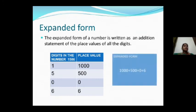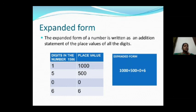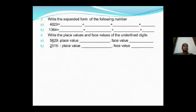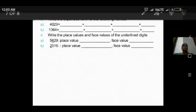So the expanded form of 1506 is written as: 1000 + 500 + 0 + 6. You use the addition symbol to represent the expanded form.